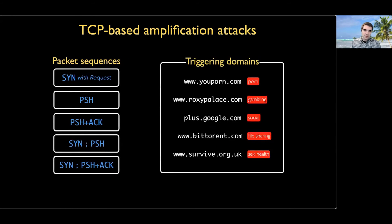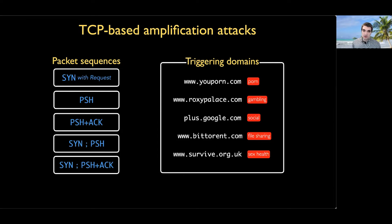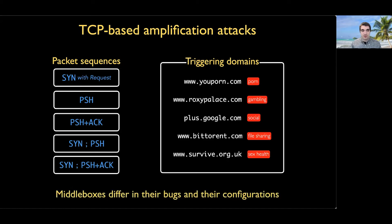Not only do we need to send a sequence of packets that a middlebox will process and think is a real connection, but the content also needs to be something the middlebox forbids in order to make it respond. We analyzed Censored Planet's data and found five domains that elicit responses from the most middleboxes in the world. This spans five diverse areas: porn, gambling, social media, file sharing, and sexual health. Middleboxes differ in both their bugs and their configurations.